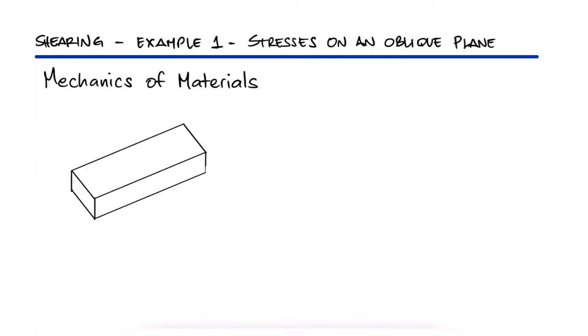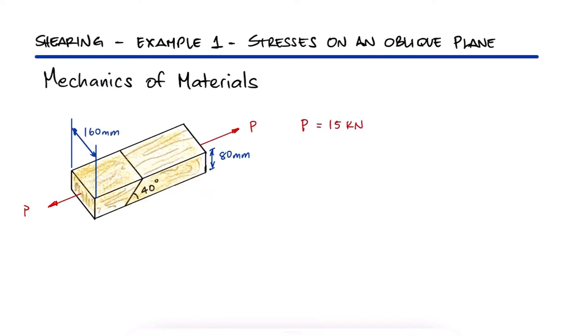Two wooden members of uniform rectangular cross section are joined by the simple glued scarf splice shown. If the load P is equal to 15 kN, what is the normal and shearing stresses in the glued splice?